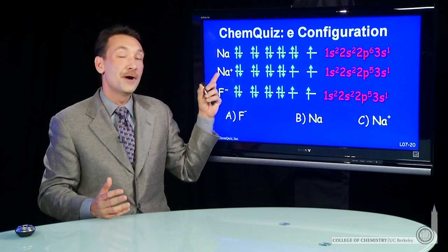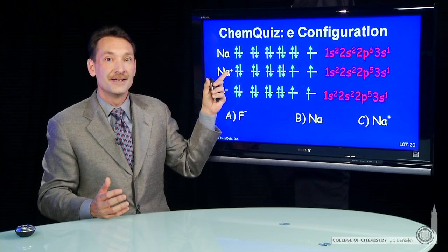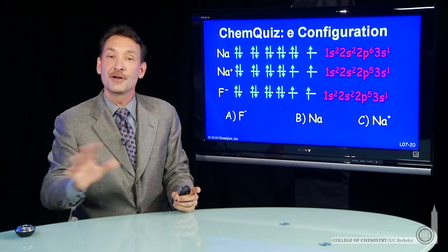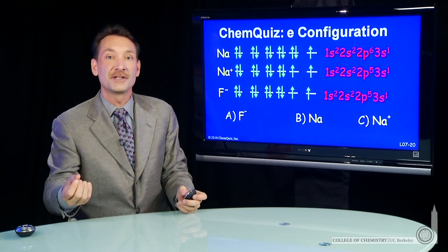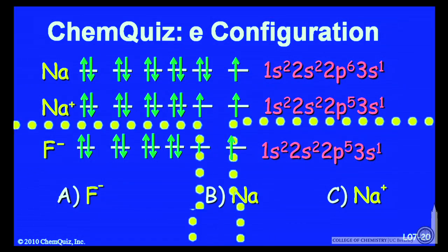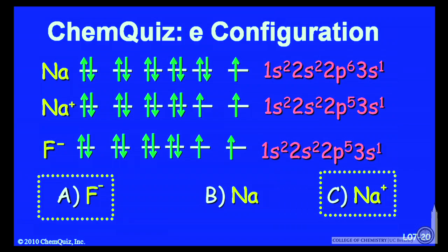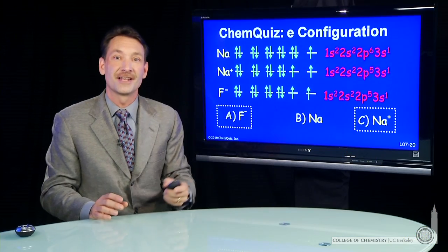So you have to know, to determine the species, the number of protons in the nucleus. We don't know that here. All we know is the number of electrons. With 10 electrons, either fluorine minus or sodium plus can have that electronic configuration.